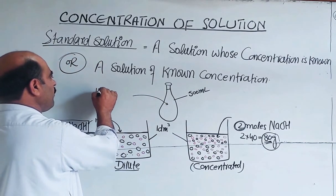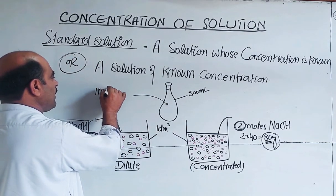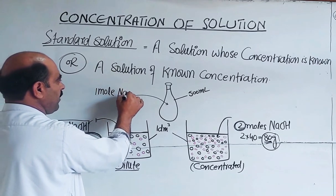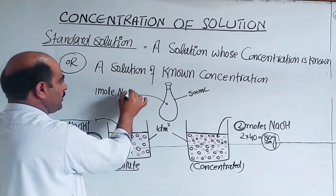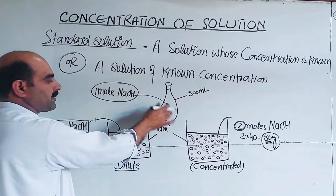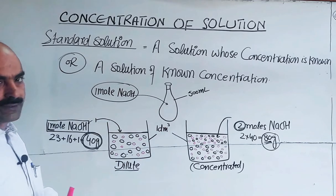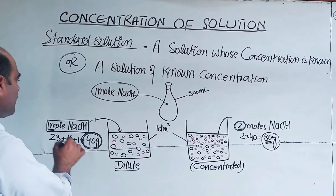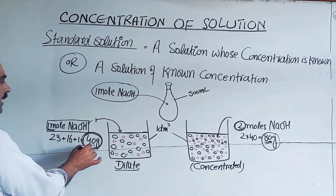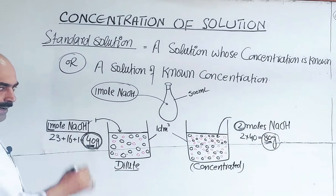For example, one mole of NaOH — one mole sodium hydroxide is placed into a flask. One mole sodium hydroxide has a mass of 40 grams.